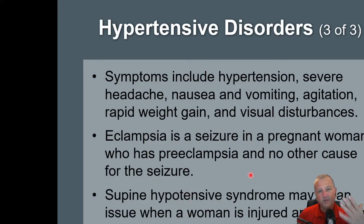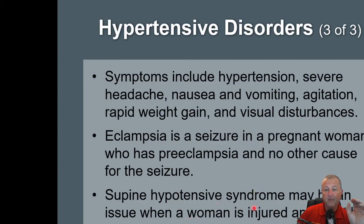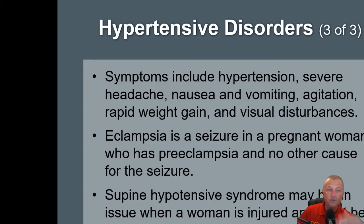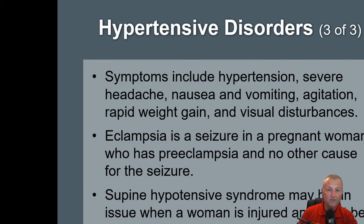Then we have supine hypotension syndrome — this is the opposite because I said hypotension. This is where the baby is in a certain position covering the aorta. If it's putting pressure on the aorta, we have a loss of blood supply bringing on that hypotension. We usually see this when the patient has been put on a backboard. Tilting the patient up to their left side will allow the fetus to move and come off of that aorta.